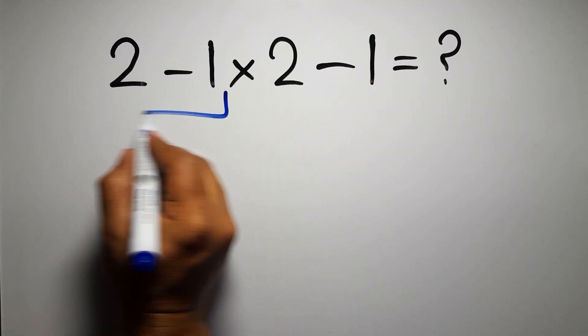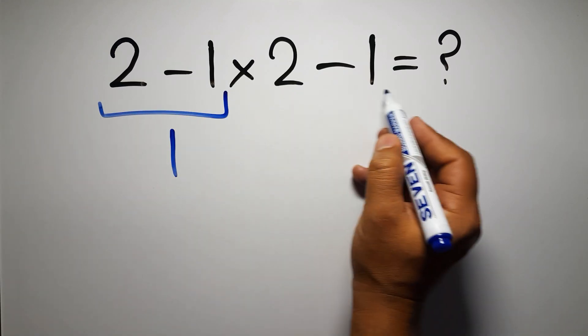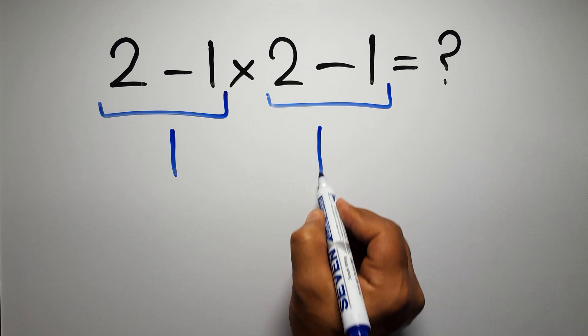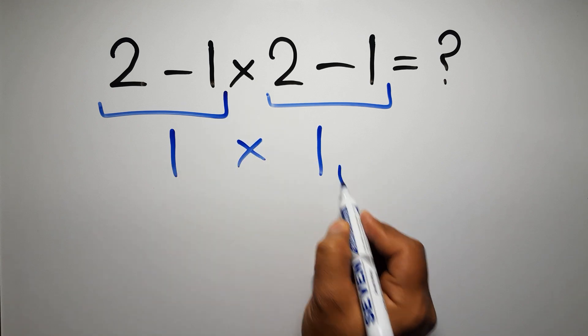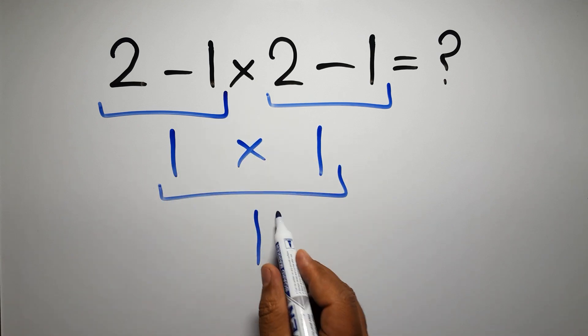2 minus 1 gives us 1, and again here we have 2 minus 1, so 1 times 1 is just 1, but this answer is not correct.